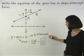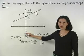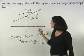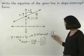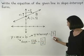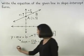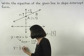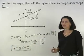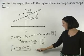Next, to find the y-intercept, remember that the y-intercept is the point where the line crosses the y-axis. Notice that our line crosses the y-axis at the point (0, 3), which means that the y-intercept is 3. Therefore, m equals one-half and b equals 3, and we substitute these values into our formula to get y equals one-half x plus 3. So the equation of the given line in slope-intercept form is y equals one-half x plus 3.